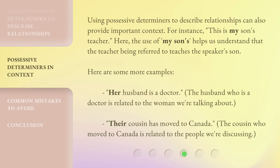Using possessive determiners to describe relationships can also provide important context. For instance, 'This is my son's teacher.' Here, the use of 'my son's' helps us understand that the teacher being referred to teaches the speaker's son. Here are some more examples: 'Her husband is a doctor' — the husband who is a doctor is related to the woman we're talking about. 'Their cousin has moved to Canada' — the cousin who moved to Canada is related to the people we're discussing.